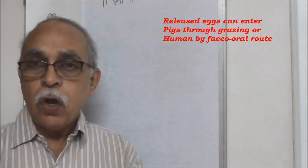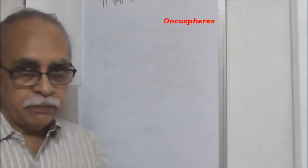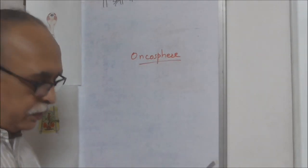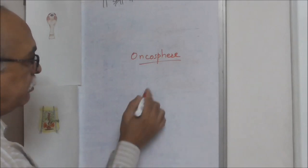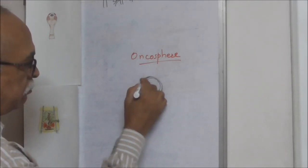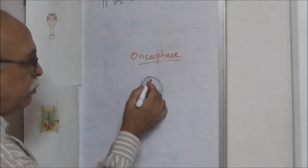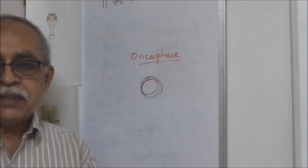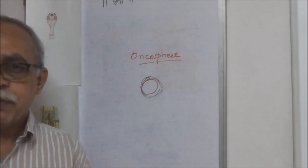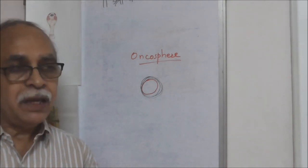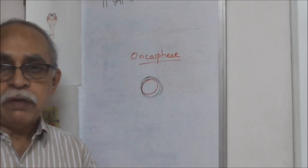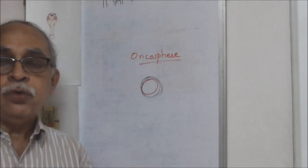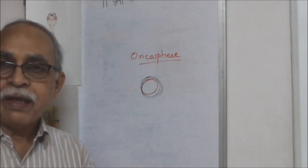These eggs are in a stage called the oncosphere, which has a highly protective covering. The fertilized egg is inside it — that is the oncosphere. These oncospheres can stay dormant for a very long span of time. Whenever possible they enter another host — pigs or other herbivores can ingest them through direct grazing.